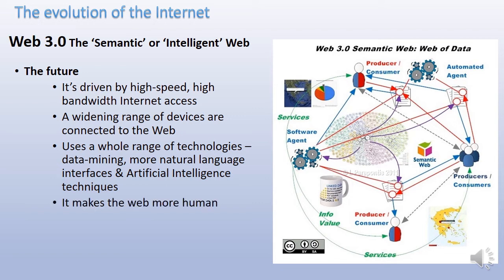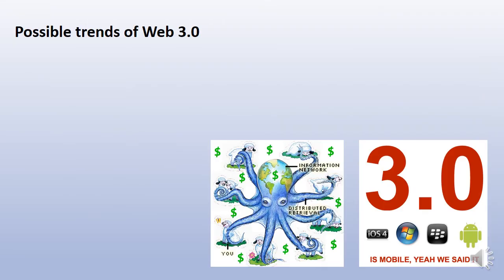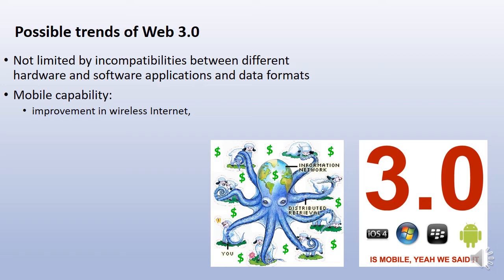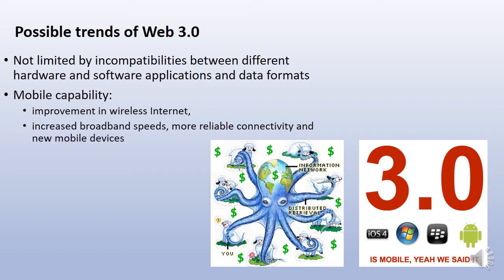Web 3.0 makes the web far more human because you can talk to the internet and it responds — you don't need to be an HTML or Java programmer necessarily. It gives automatic responses. Possible trends of Web 3.0 include: it's not limited by incompatibilities between different hardware, software applications, and data formats; it's become a lot cleverer in handling different hardware and software platforms; it has mobile capability with improvements in wireless internet; and there are increased broadband speeds, more reliable connectivity, and new more powerful mobile devices — all of which make Web 3.0 possible.